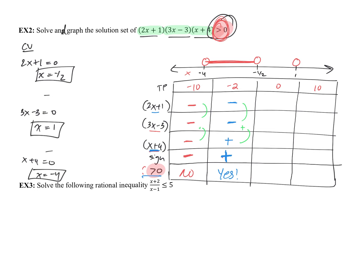Checking 0: into 2x plus 1 gives positive; into 3x minus 3 gives negative; into x plus 4 gives positive. Positive times negative is negative, then negative times positive is negative. Is negative greater than 0? No — we do not fill in that section. Checking 10: all three factors give positive results. Positive times positive times positive is positive. Greater than 0? Yes — we fill in that interval with an arrowhead indicating infinity.